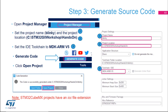Now to generate the code, go to the Project Manager tab. Give a name to your project — in this case, Blinky. Give a location where the project will be generated; in this case, on the C drive under the STM32 G0 workshop, hands-on directory. Select which toolchain/IDE to use — we're going to use Keil MDK-ARM V5. Then click Generate Code in the upper right corner of STM32 CubeMX. This generates the code at your specified location and opens a code generation window — click Open Project.